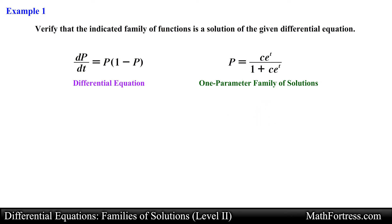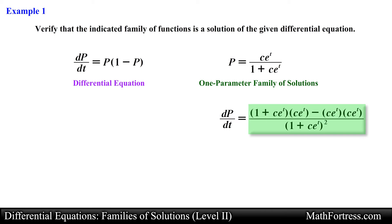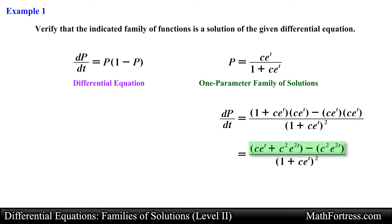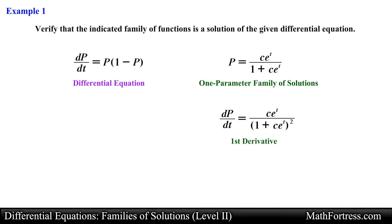Similar to the way we verified particular solutions in the previous videos, let's first find the derivative of this one-parameter family of solutions. In order to find the derivative of p with respect to time we are going to have to use the quotient rule. Applying the quotient rule we obtain the following expression. Next, let's simplify the numerator by distributing the c times e to the power of t term and then collecting like terms. Doing that we obtain the following expression for the derivative.